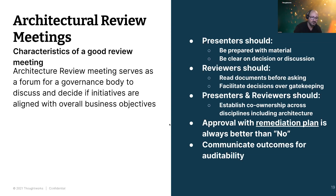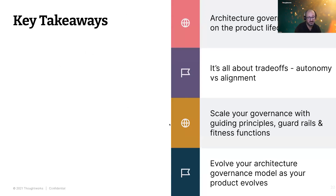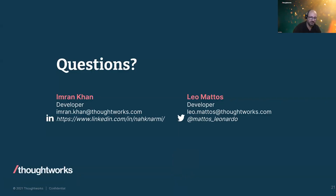It was great to hear from you. These are the key learnings, and I hope you'll keep them as well. It's pretty clear that architecture governance adapts as the product architecture and product stage evolves, and we need to always keep an eye on the autonomy versus alignment balance. Thank you for listening. We are available by email or social media for any follow-up questions and comments. Please reach out and have a great rest of the month.